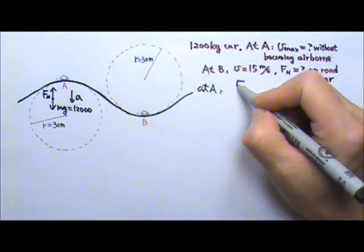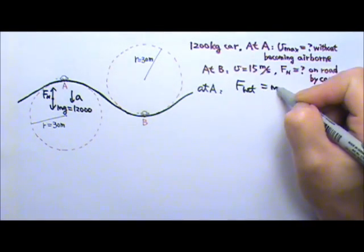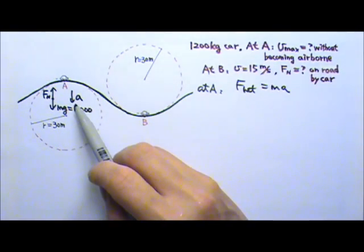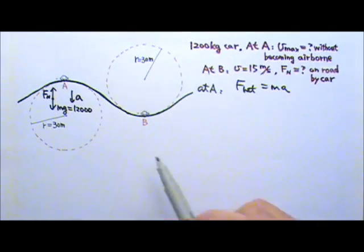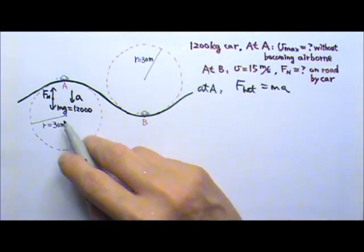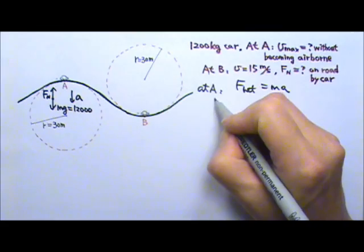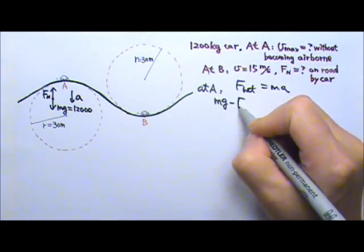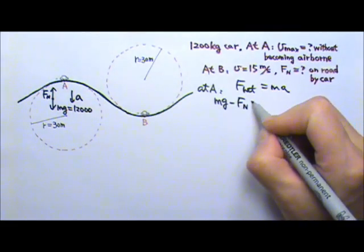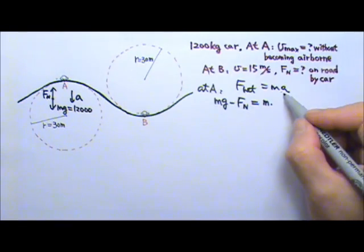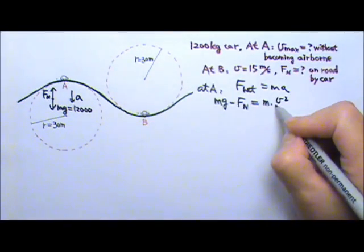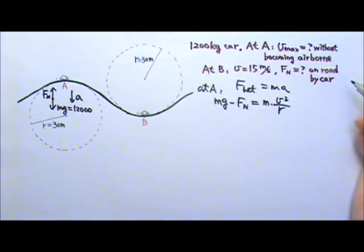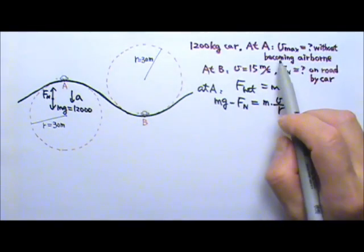When we write the net force equals to MA, the acceleration goes downward. So the downward force is more than the upward force. So the net force is the bigger side minus the smaller side. And that equals to M times the acceleration is V squared over R because it's a circular motion.